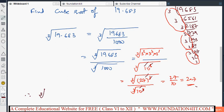Therefore, cube root of 19.683 is equal to 2.7. The method is we need to convert into fractions, then we need to find out the cube root by using same prime factor method.